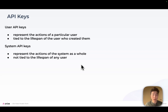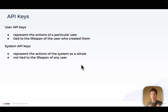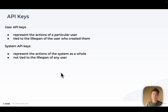User API keys, as the name suggests, represent the action of a particular user. They're tied to the user who creates them, so if that user is deleted, the user API key is also automatically deleted. You'd use a user API key when a user is in the loop — for example, if somebody is running an experiment in a notebook. System API keys, on the other hand, represent not any individual user but the system as a whole. They're not tied to any individual user, so even if the user who created the system API key is deleted, that key continues to exist. A good use case is something running in CI.